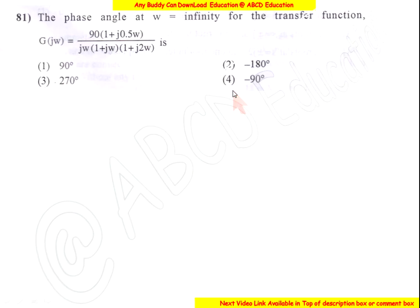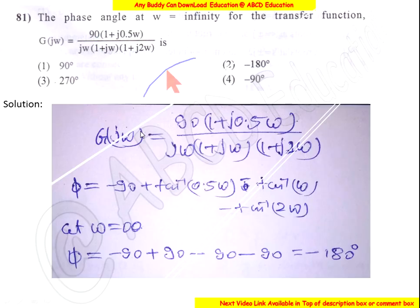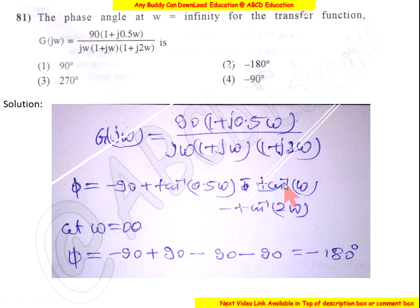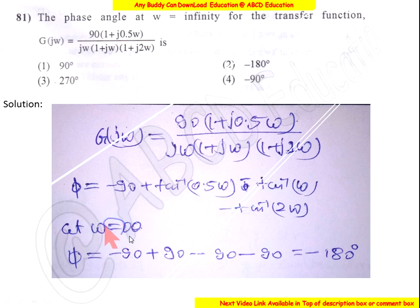Now question number 81. Find the phase angle at omega equals infinity for the given transfer function. The phase equals minus 90 plus tan-inverse(omega) minus tan-inverse(omega) minus tan-inverse(2·omega). Substituting omega equals infinity, the phase equals minus 180 degrees. So the answer is option 2.